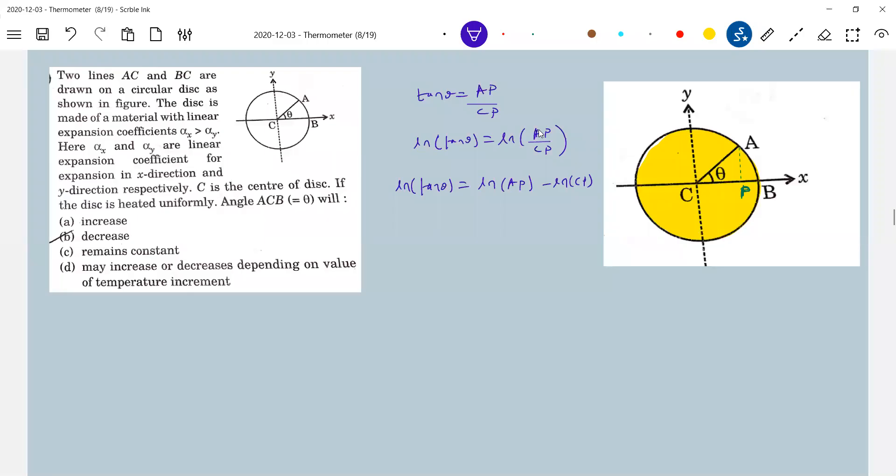Let me differentiate this. This will be secant squared theta by tan theta d theta. This will become AP by AP. The derivative of log x will be 1 by x dx. This will be similarly derivative of CP by CP.